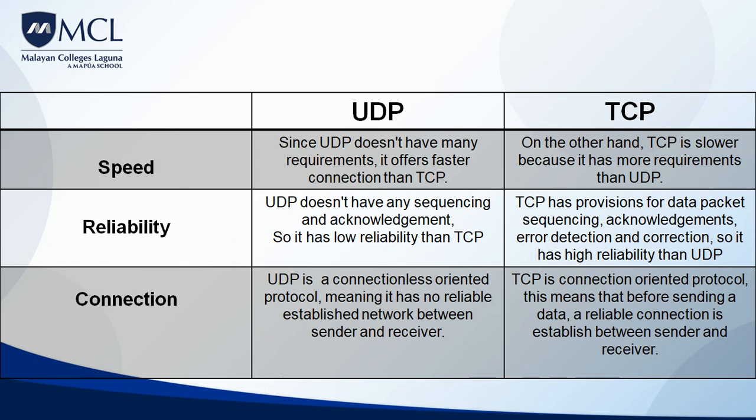When it comes to connection, UDP is called a connectionless-oriented protocol, meaning it establishes an unreliable connection between sender and receiver. Unlike TCP, which is called a connection-oriented protocol — before sending data, TCP makes sure that a reliable connection has been established between sender and receiver before transmitting the data.